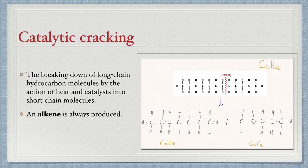Catalytic cracking involves the breaking down of long hydrocarbon chains into short carbon chains by means of a catalyst. This reaction always produces one alkene. When doing a question on catalytic cracking, you will need to make sure that there is no loss of carbons or hydrogens.